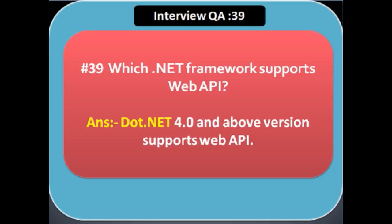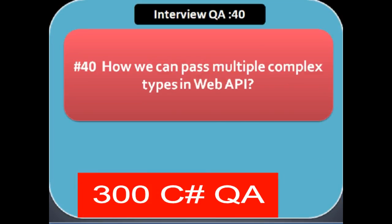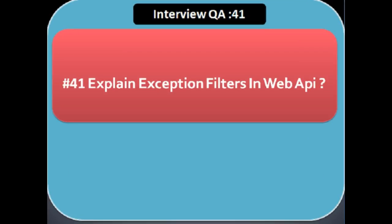Next question: which .NET framework supports Web API? .NET 4.0 and above supports Web API. Next question: how can we pass multiple complex types in Web API? There are two methods to pass complex types: ArrayList and Newtonsoft array.